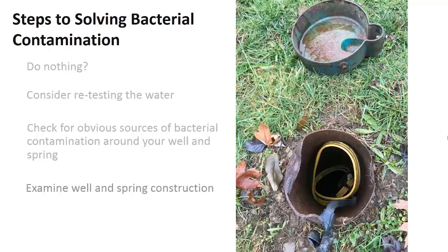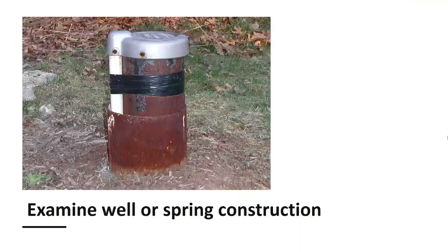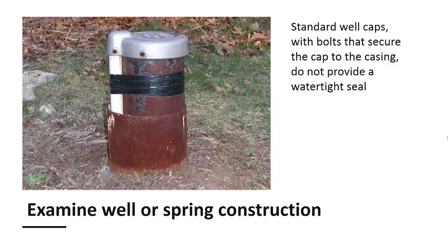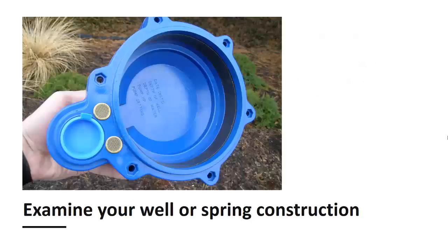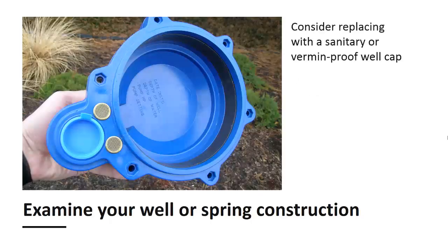A fourth step for solving bacteria problems is to examine your well or spring construction. Here, a bent well casing allows for openings under the well cap that provide easy access for insects and small mammals. Make sure your well casing extends above the ground surface and is intact to prevent contamination. If needed, new pieces of casing can be welded onto the existing casing to make necessary repairs. Take a close look at your well cap. Make sure it is tightly secured to the casing and is sealed to prevent insects and surface water from entering the well. Standard well caps with bolts do not provide a watertight seal and can be a common cause of bacteria problems. Consider replacing it with a sanitary or vermin-proof well cap, which has a rubber seal inside the cap preventing insects and surface water from entering the well.